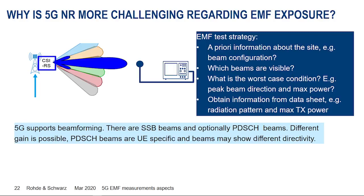Another aspect is beamforming in 5G. The SSBs are mapped on different beams sent in different directions — but this is only for the SSB. The traffic may use the same beam as the SSB, or maybe an alternative beam. Reference signals in the traffic channel are user equipment specific and flexibly configurable, so we don't know how they look or where they are — we cannot use code selective measurement and have to do extrapolation.